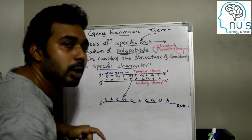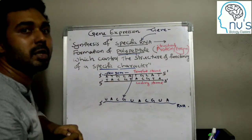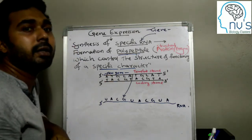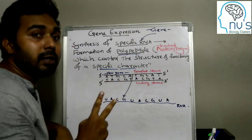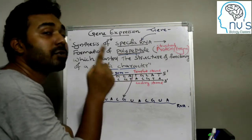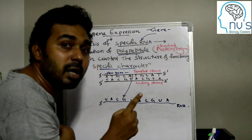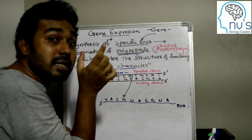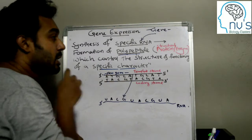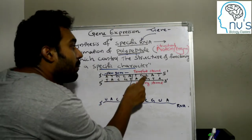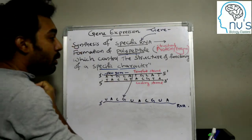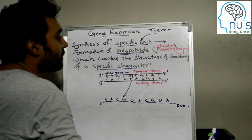The process of creating RNA from the template strand is called transcription. There are two strands of DNA. There is a template strand and a coding strand. The first strand is the coding strand.